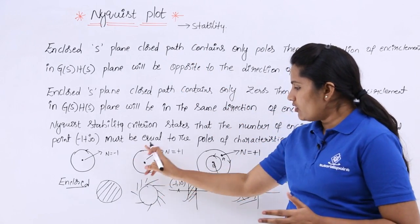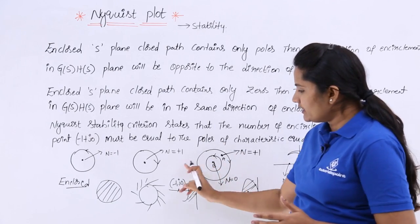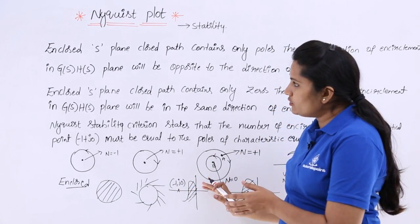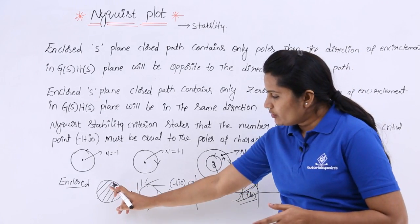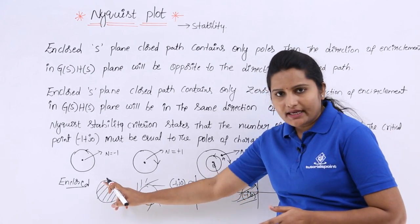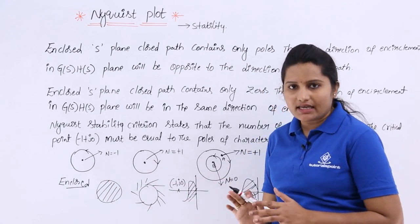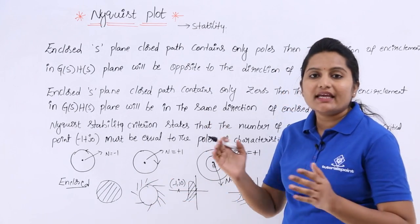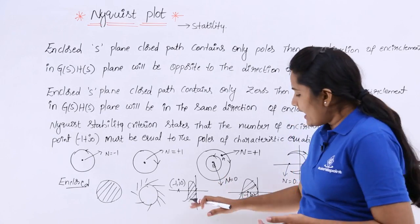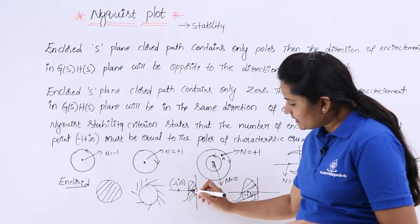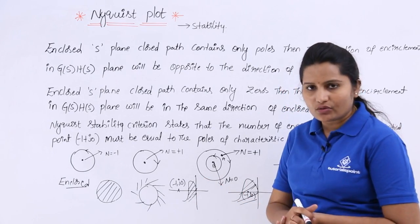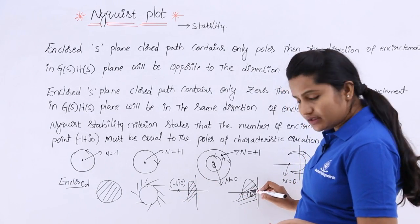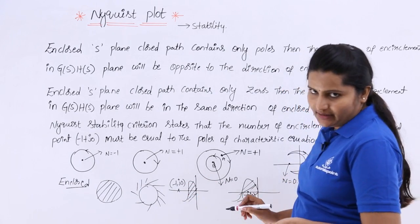This is called encirclement and these are called enclosed. Enclosed means the total area in this circle is enclosed. For example, if the path is like this, the outside area is enclosed, and if the path is like this, the inside area is enclosed. If a point is in this enclosed area, it will be treated accordingly.